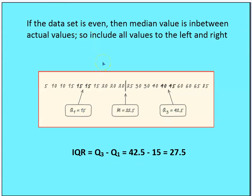Now let's move on to an example where the data set is even. In this case, the median value falls right between two values, so we split the two sets of values into two halves without excluding any values. Because we end up with another even set of counts, we take the middle two values and average those for each half — those become our first and third quartile. In this case, IQR is 42.5 minus 15, or 27 and one half.